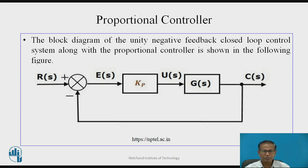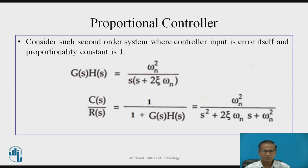This is the block diagram of the proportional controller. The block diagram of the unity negative feedback closed-loop system along with the proportional controller is as shown above. Here R(s) is the reference input signal and C(s) is the controlled output signal. Now we will derive the transfer function. Consider a second-order system where the controller input is the error itself and the proportionality constant is 1. Therefore, G(s)H(s) = ωn² / [s(s + 2ζωn)].